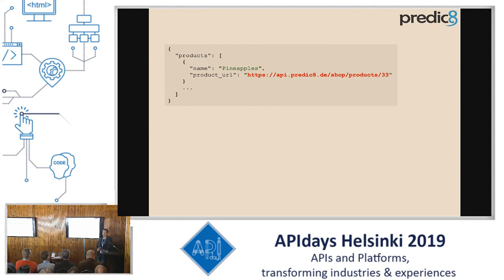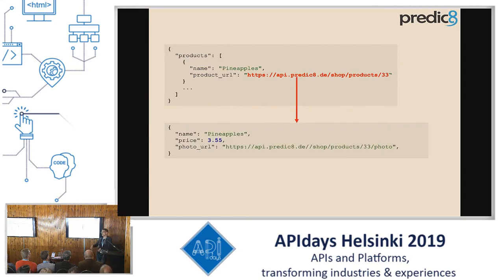REST — Representational State Transfer — is all about state and transitions from one state to the next state. A client requested a resource and got a representation, and is now on that state. And using a link, it can transition from one state to the next state.